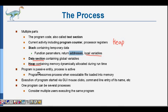A program is a passive entity — it is not active. A process is the program that is active and currently being executed. Execution of a program can be started via a command line entry or by GUI mouse clicks. One program can in fact have several processes.